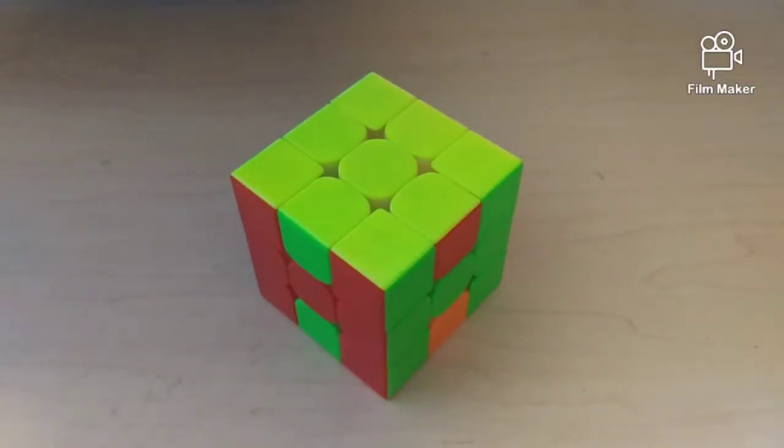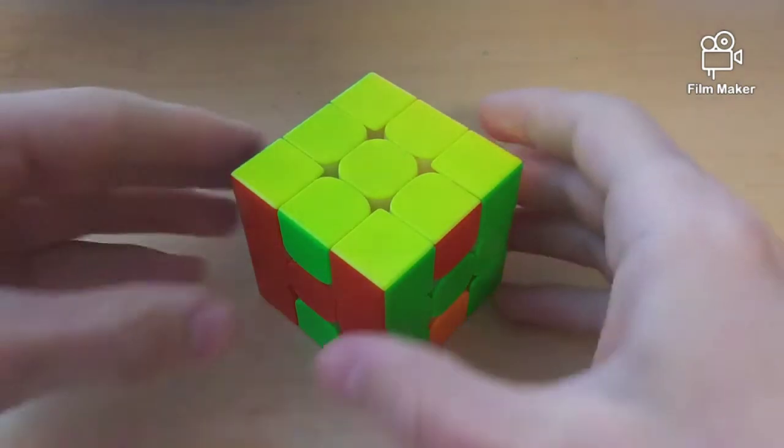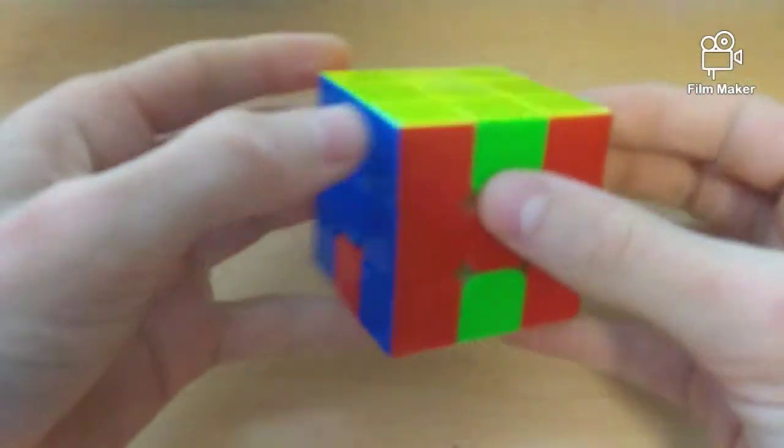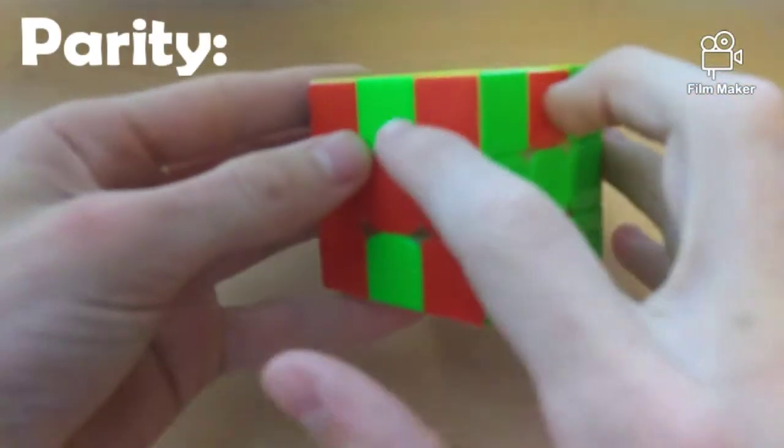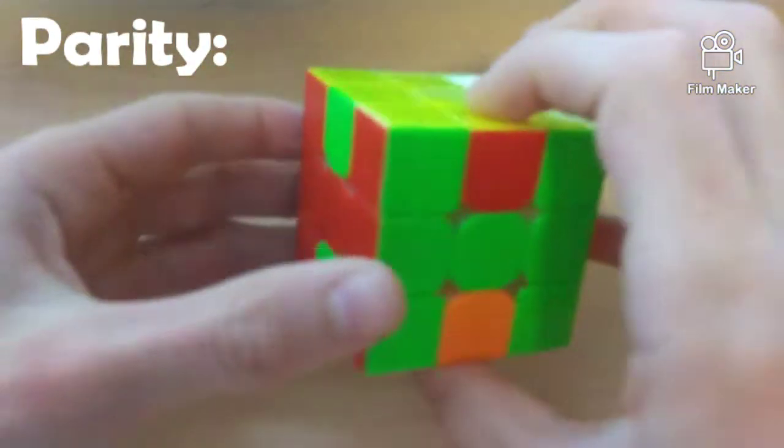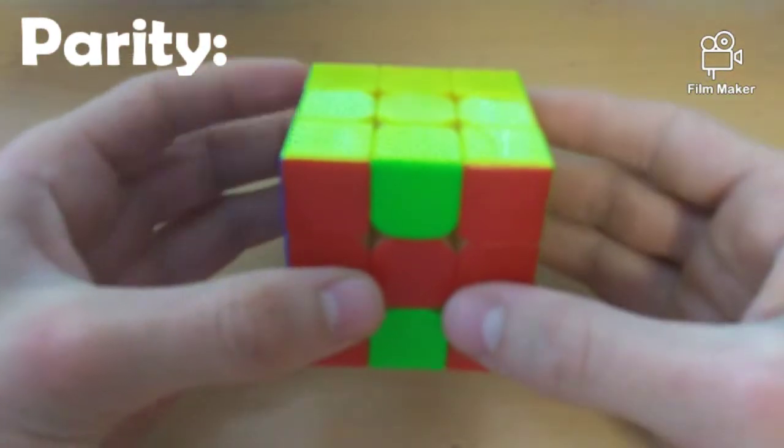Now, sometimes in the PLL or PFL stage, you will see something that you can't solve with the normal algorithm. And this is sort of a parity. Now, if you can't solve it on the top, then you also can't solve it on the bottom.